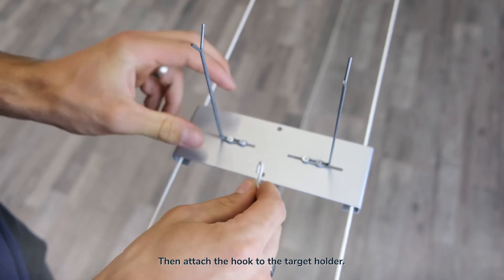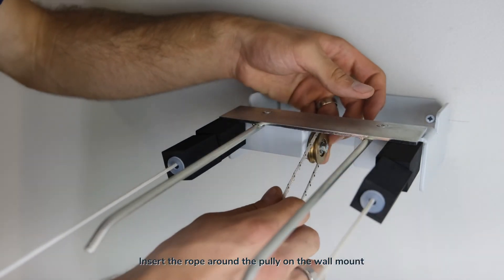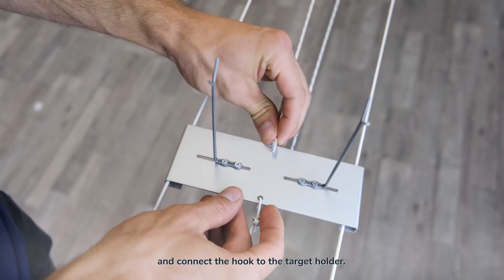Then, attach the hook to the target holder. Insert the rope around the pulley on the wall mount and connect the hook to the target holder.